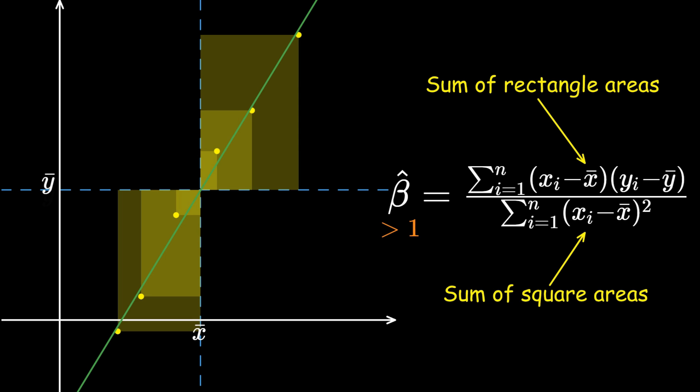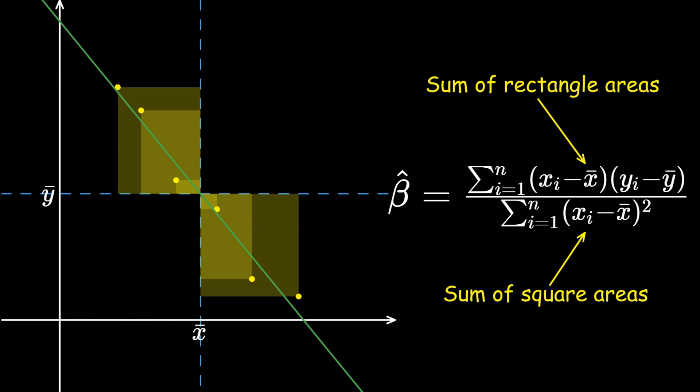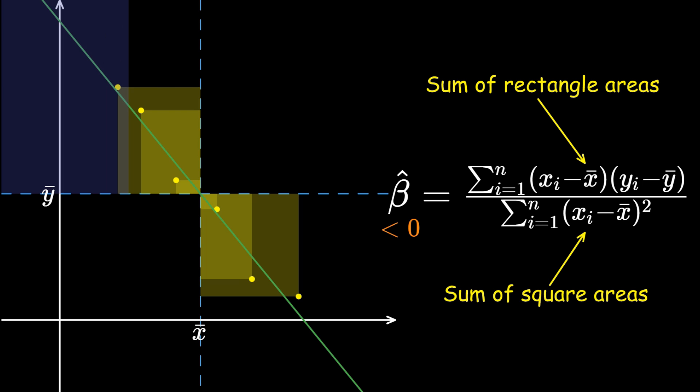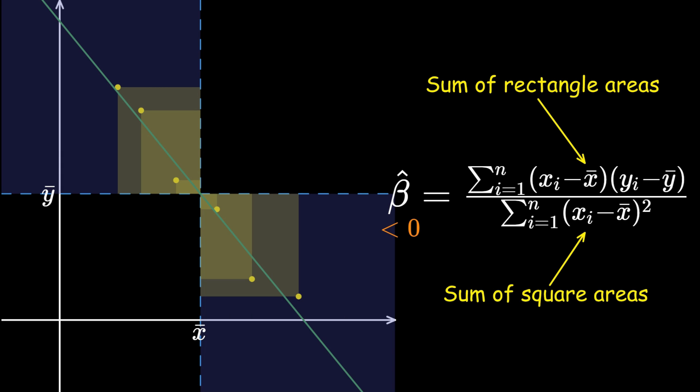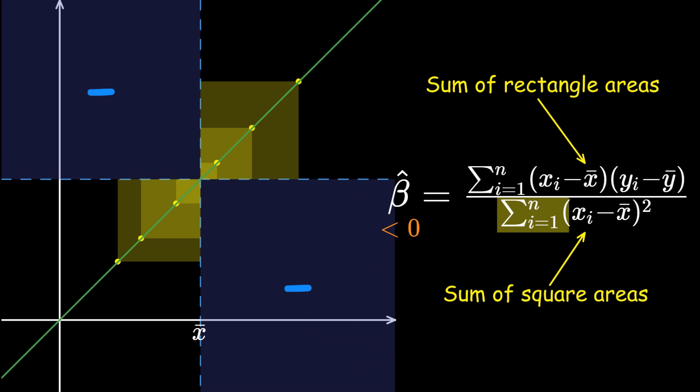Also, it is possible for the regression line to have a downward slope, which implies that beta hat is negative. If the points are living in the top left quadrant of the center point, or the bottom right quadrant, then you will be adding up the quote-unquote negative areas of the rectangles. Of course, when you divide by the sum of square areas, that value will always be positive, as the squares always live in the positive quadrants.